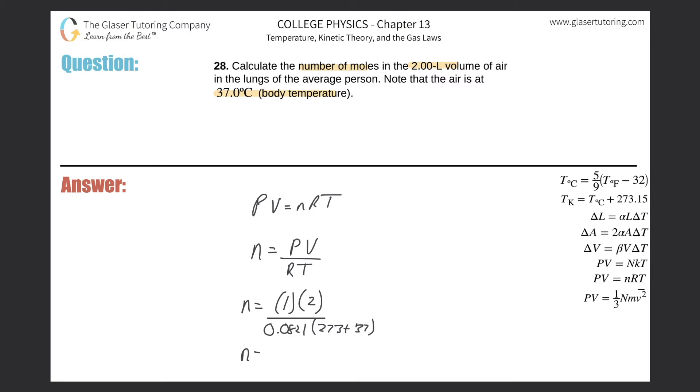Now all we have to do is calculate this. So this is going to be 2 divided by 0.0821 times 273 plus 37, and we get a value of 0.0786 moles.